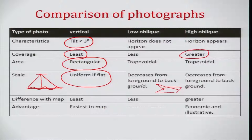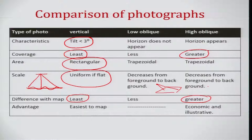Scale decreases from foreground to background in both low and high oblique photographs. The difference with maps will be least for vertical photographs, since maps usually have a very uniform scale. High oblique photographs will have greater variation in terms of scale as compared to available maps.